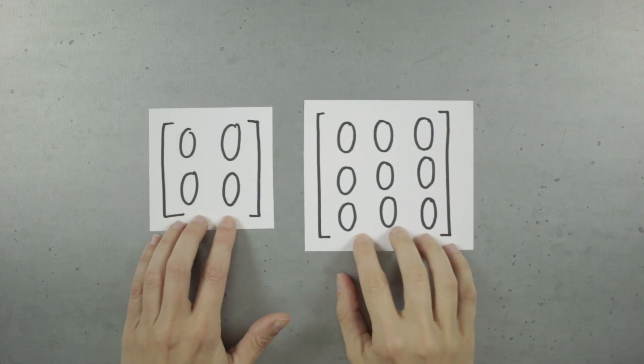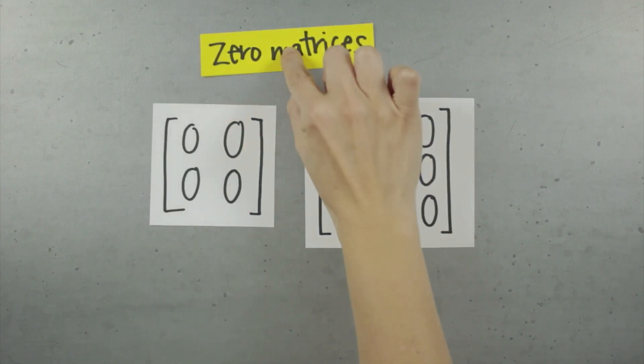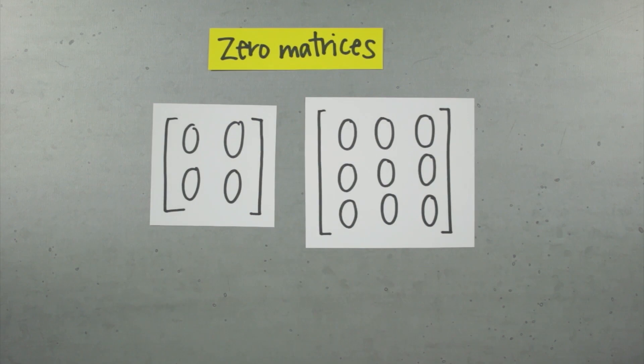So if an identity matrix is like 1, what's the equivalent of 0 when we're talking about matrices? Well, the 0 matrix is a matrix full of 0s, and whenever we multiply a matrix by its associated 0 matrix, the result is going to be another matrix full of 0s. We always denote a 0 matrix with a capital O, just like we always denote an identity matrix with a capital I.